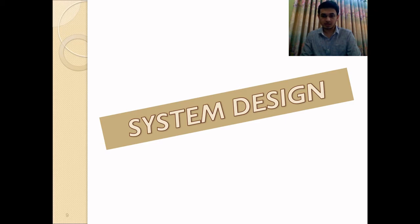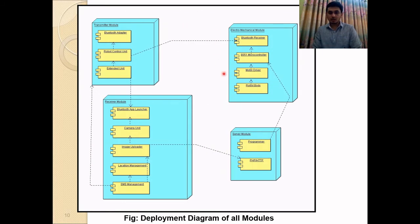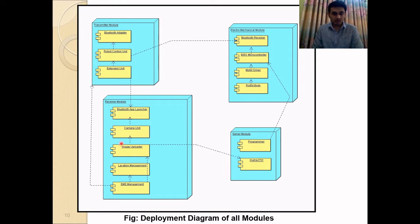Moving to system design. The transmitter module is the transmitter Android app, which has components like a Bluetooth adapter, robot control unit, and extended or camera control unit. The receiver module has a Bluetooth app launcher to launch the receiver Android app, which has components like camera unit, image uploader, location management, and SMS management. The server module is responsible for uploading images to the server and handling microcontroller programming.